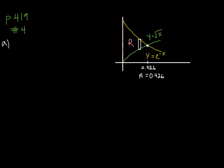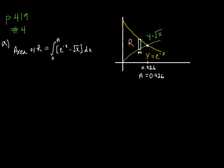In part A, I'm finding the area of region R. I draw a little approximating rectangle to visualize the heights. The width is simply dx, and the heights are the vertical distance between the curve e to the negative x and the curve square root of x. So I write my integral going from 0 to 0.426, summing the heights times the widths. Computing this on the calculator gives 0.162 square units.